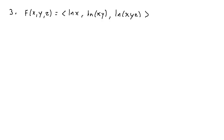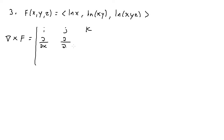For number 3, we have F(x, y, z) = ⟨ln x, ln(xy), ln(xyz)⟩. Let's find the curl first. We take the cross product of del and F, setting up the matrix with i, j, k on top. Del's components are partial with respect to x, partial with respect to y, and partial with respect to z. F's components are: x component = ln x, y component = ln(xy), z component = ln(xyz).